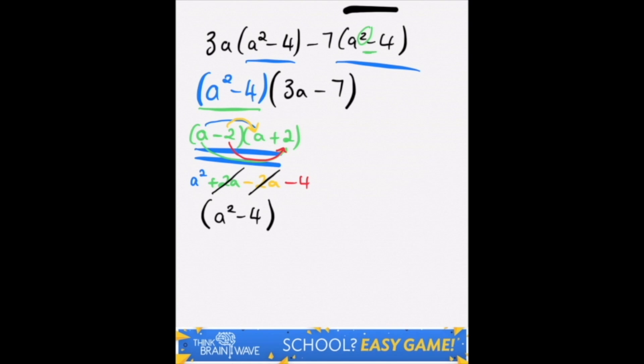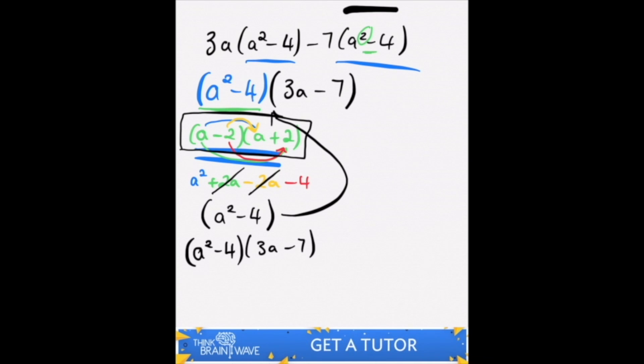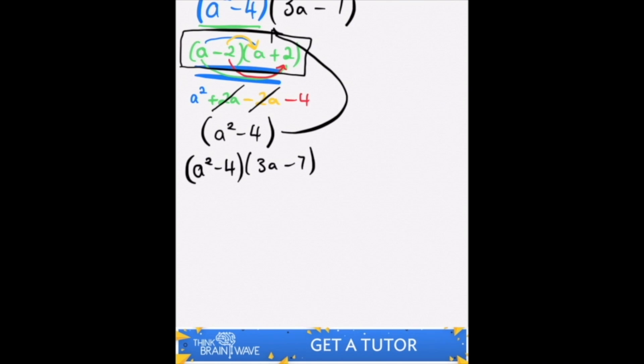This is exactly what you wanted to break down, which proves that you have done the difference correctly. You've got the 2 from taking the square root of 4, and you've got the a from taking the square root of a squared. You now rewrite it as a squared minus 4 times 3a minus 7, and then you break the a squared minus 4 into a minus 2 times a plus 2 times 3a minus 7.